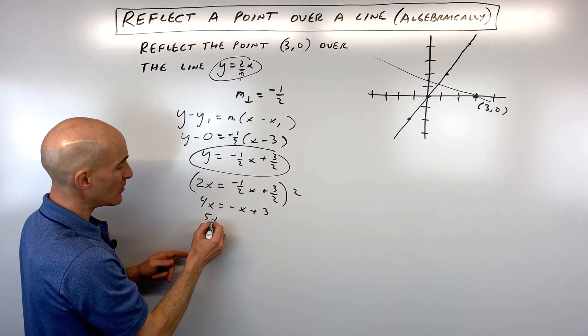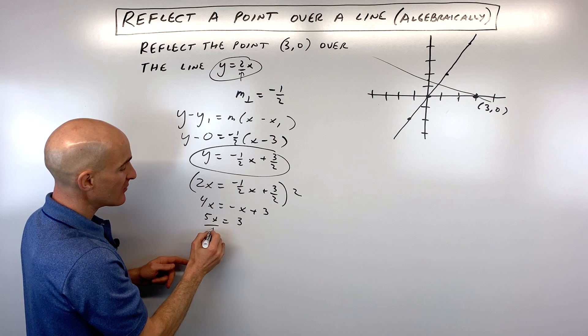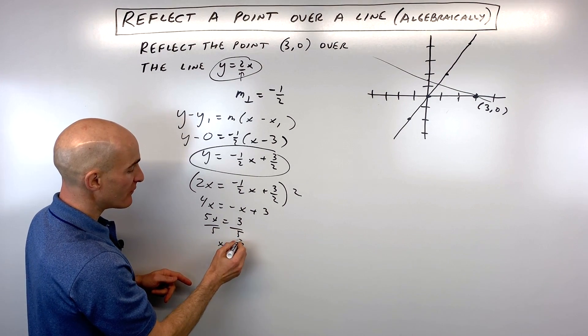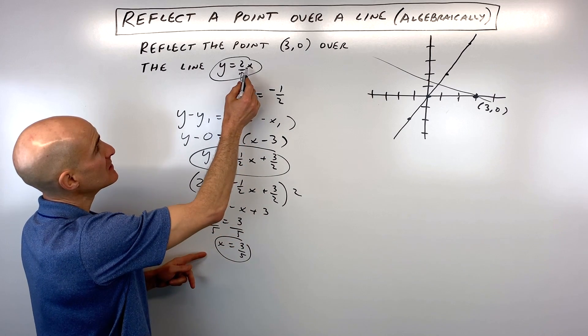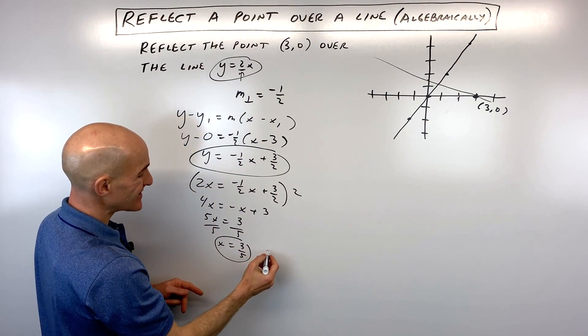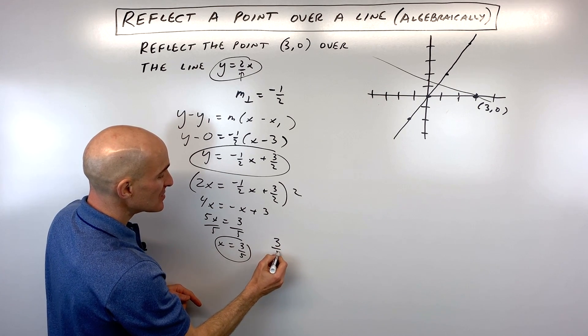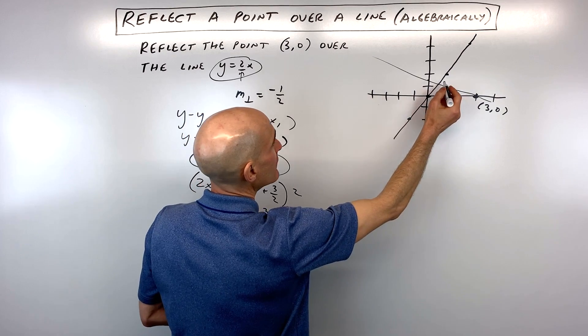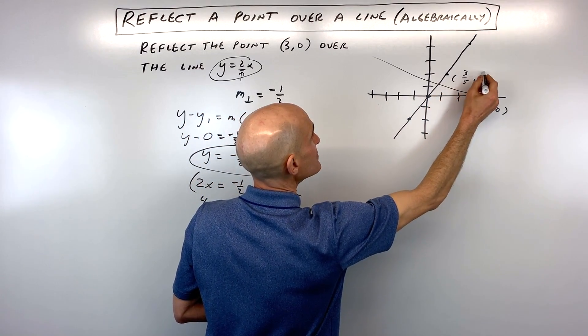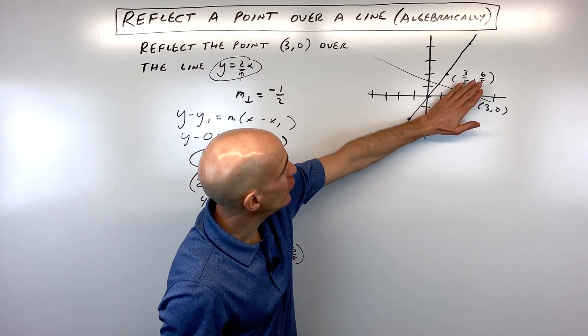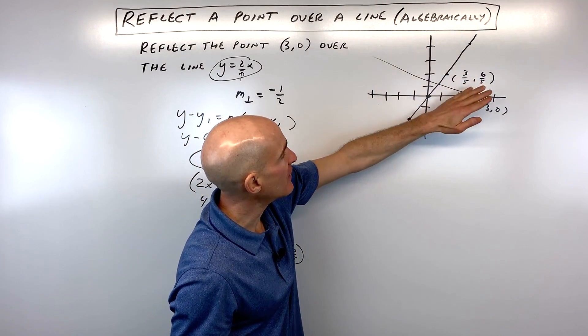Now if we add x to this side, we get 5x equals 3, divide both sides by 5, and you can see that x is equal to 3 fifths. If we put it back in to either one of these equations, 2 times 3 fifths is 6 fifths. So we can see that these two lines are crossing at 3 fifths comma 6 fifths right there. Let's write that down: 3 fifths comma 6 fifths.